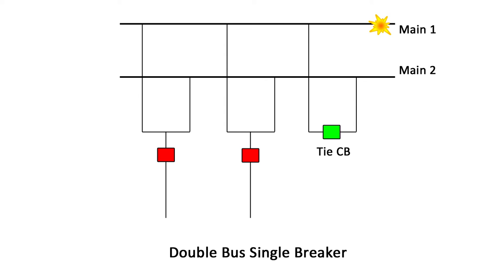A fault on one bus requires isolation of the bus, while the circuits are fed from the opposite bus. The double bus single breaker scheme is more expensive and requires